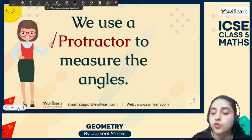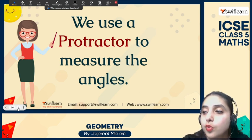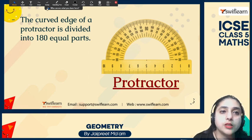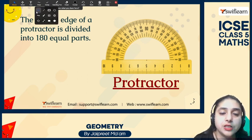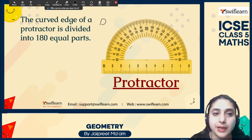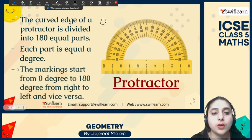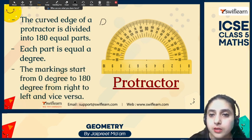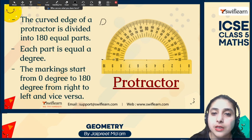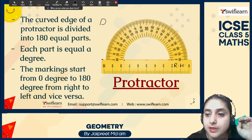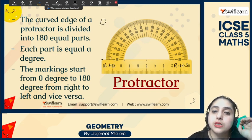In the previous session I already showed you how to use a protractor. A protractor looks like a curved shape — like the letter D. It has two scales. One is the lower scale and another is the upper scale. The lower scale starts from 0 on the right-hand side, and the upper scale starts from 0 on the left-hand side.